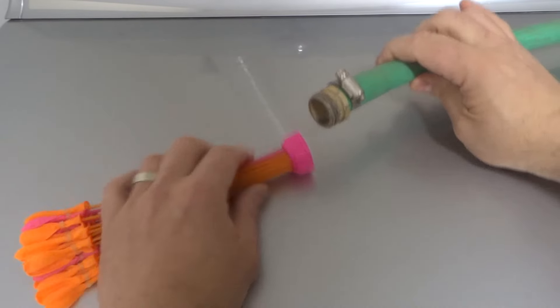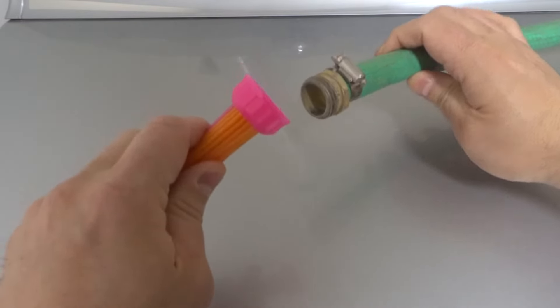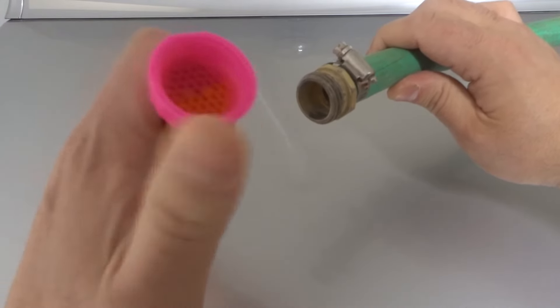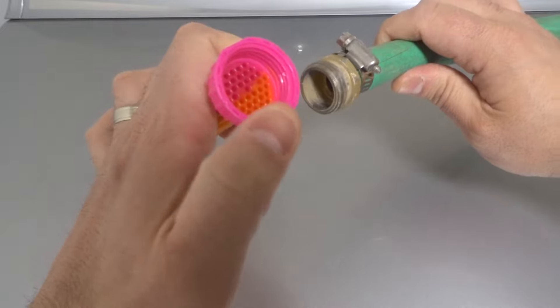Now essentially what you want to do is you want to take the Bunch O Balloons and you're going to focus on turning the Bunch O Balloons, not the hose. On this end right here, you can see that it is threaded.